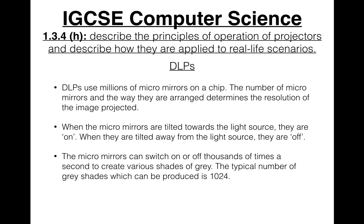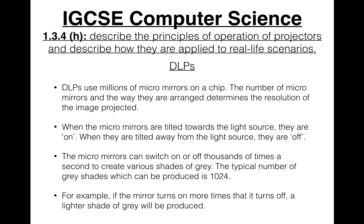The micromirrors can be switched on or off thousands of times a second to create various shades of grey. The typical number of grey shades which can be produced is 1024. For example, if the mirror turns on more times than it turns off, a lighter shade of grey will be produced.